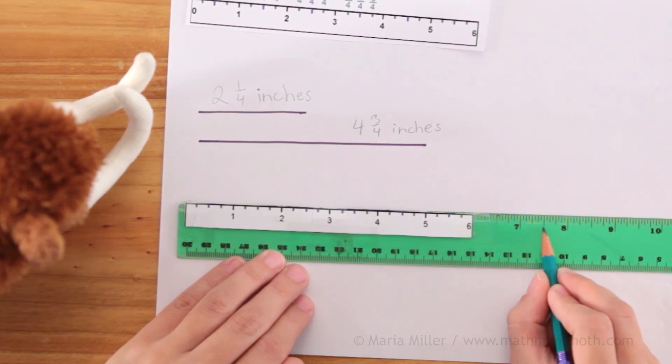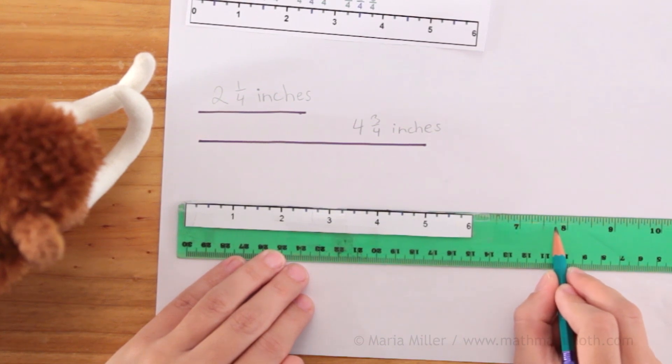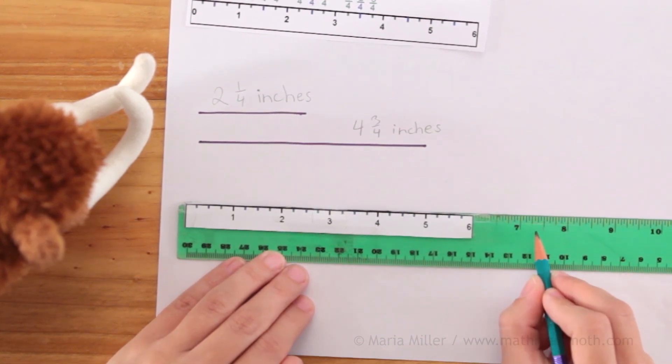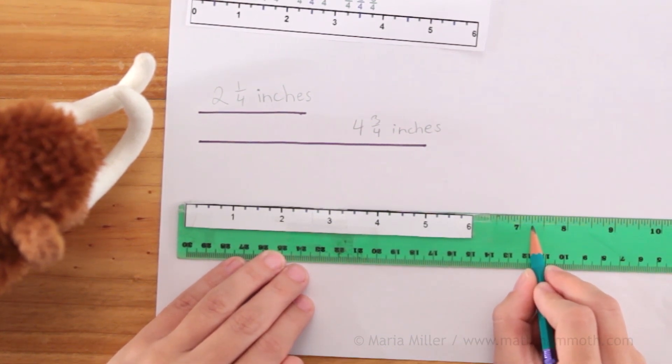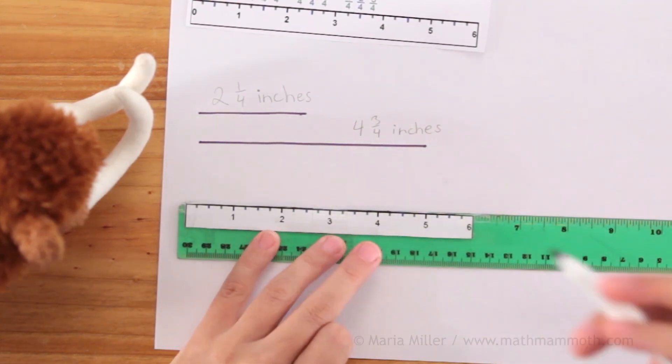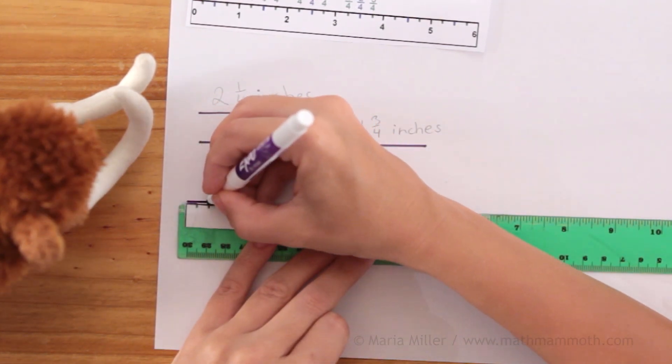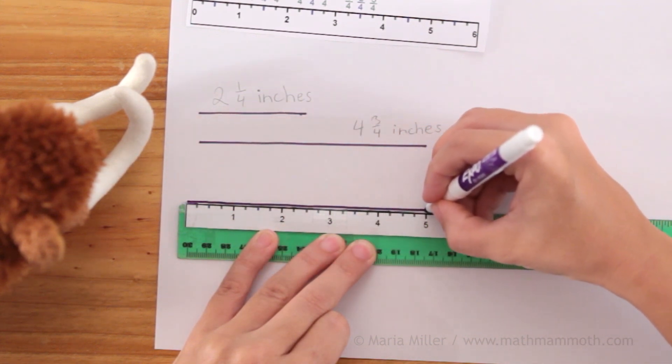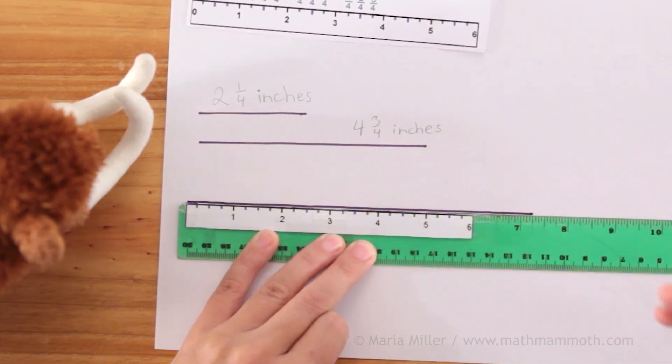And then halfway between the half-inch mark and eight-inch mark, over here, this one is for the three-fourths of an inch. So this is the mark I need to draw my line up to.